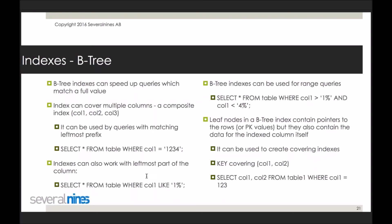B-tree indexes can also be used for range queries. You don't have to match exact values — it can also be wildcarded. A query like SELECT * FROM table WHERE column1 BETWEEN 1 AND 3 or using a wildcard prefix will work and be able to use an index on column1. Leaf nodes in the B-tree index contain pointers to rows (in MyISAM) or primary key values (in InnoDB), but they also contain data for the indexed column itself. This is something which can be used to create covering indexes.